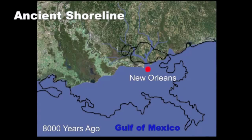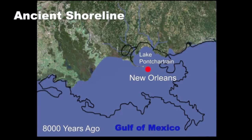Where New Orleans is located today was also under the sea. Sea level continued rising, forming a bay that would ultimately become Lake Pontchartrain.